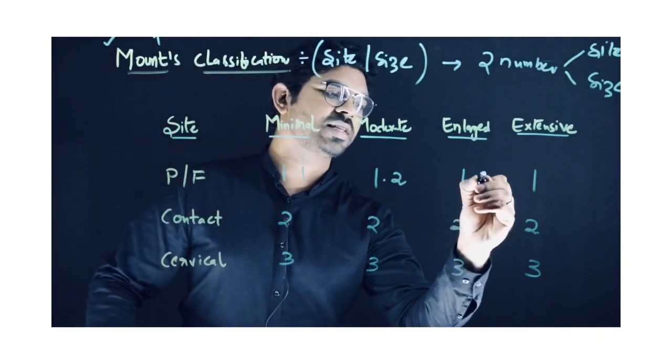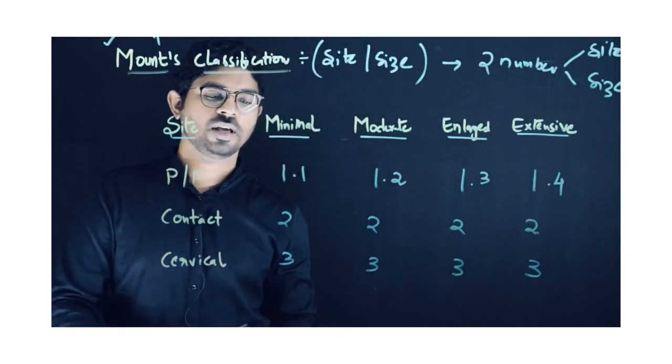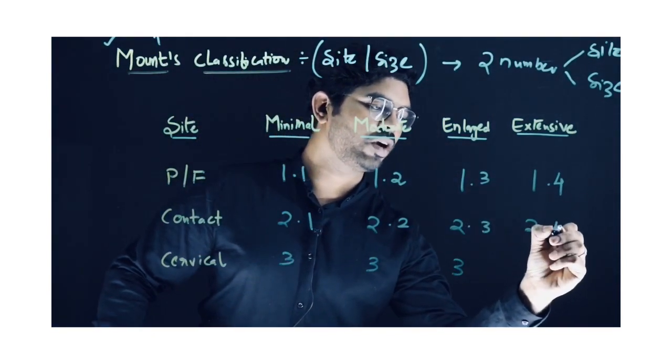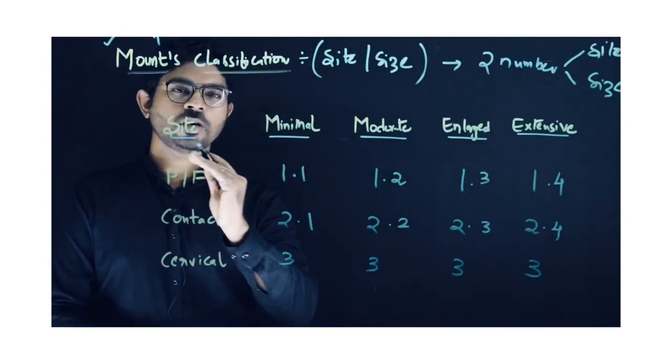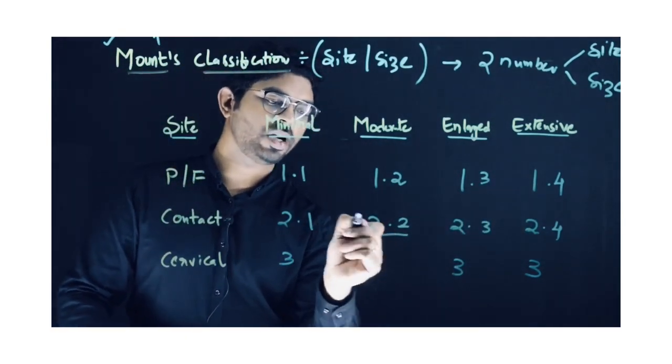Enlarged is 3, and extensive which cannot be restored is 4. Similarly, 2.1, 2.2, 2.3, 2.4 means it's present on the proximal surface with different intensity. If it's 2.2, it's present on the